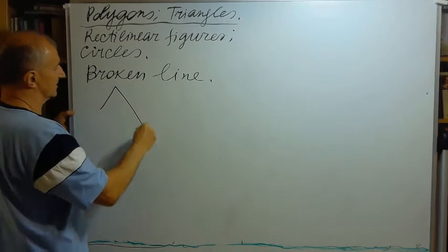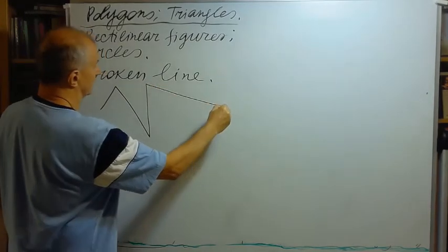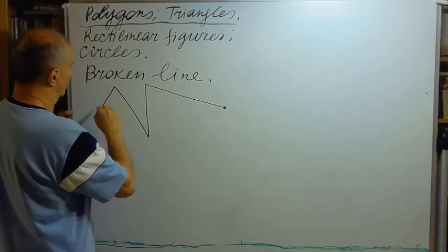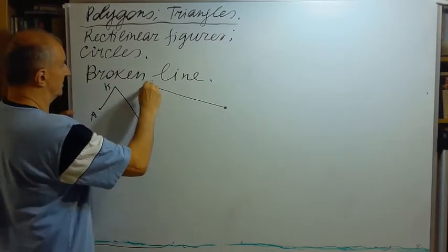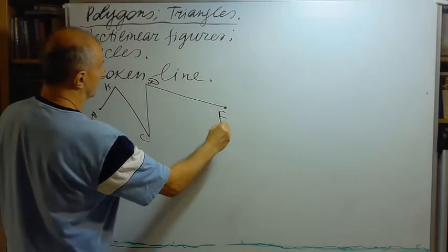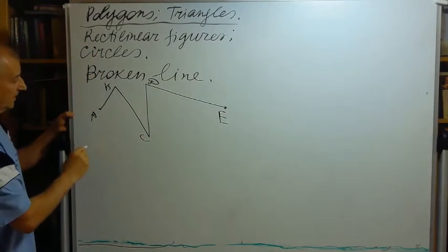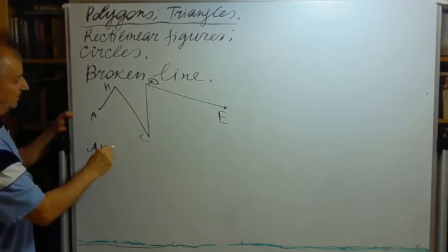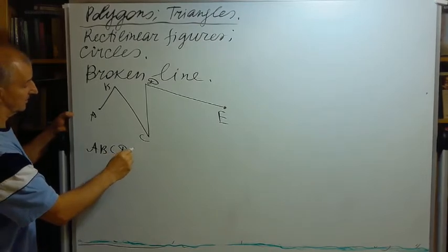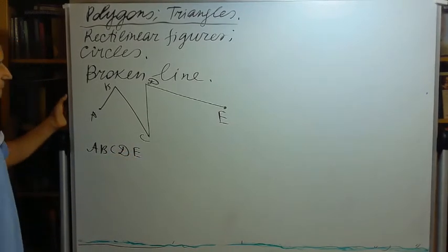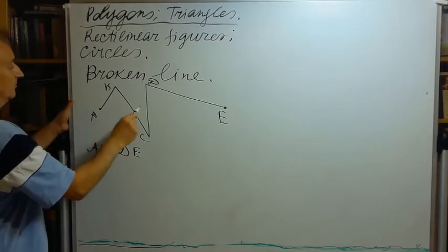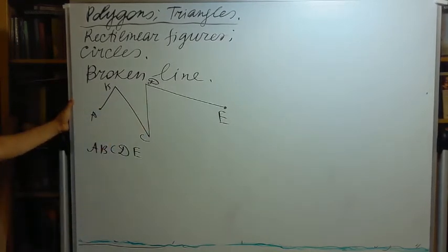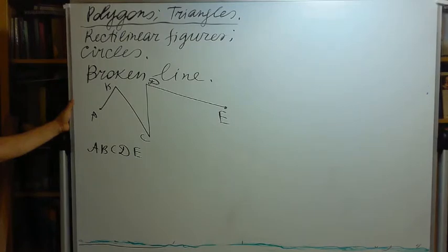Something like this: A, B, C, D, E is an example of a broken line. You know, the basic vertices C, D, E is a broken line of one, two, three, four - four sides. They're called sides of a broken line.